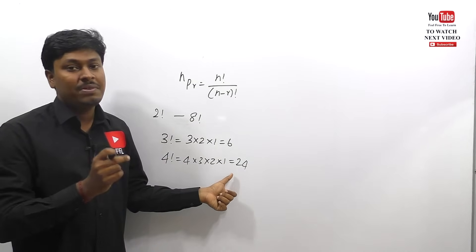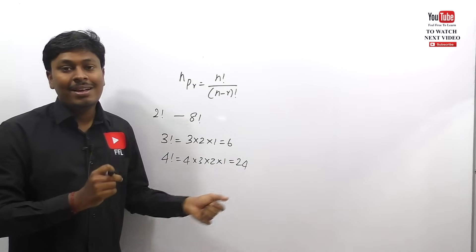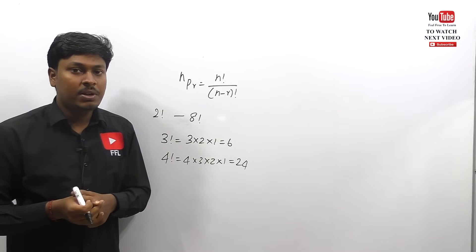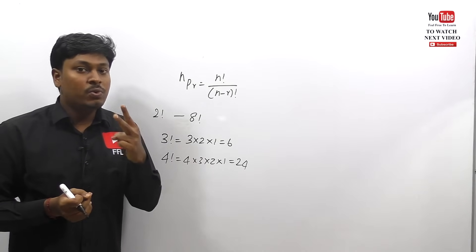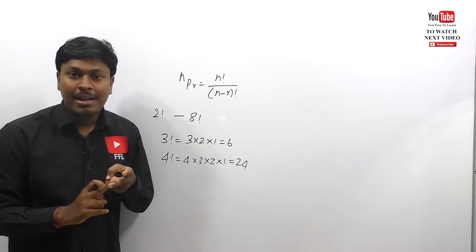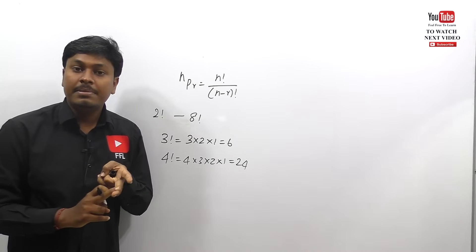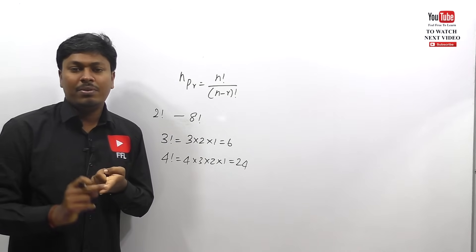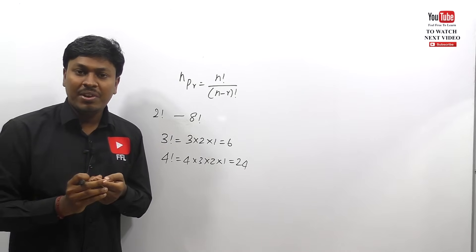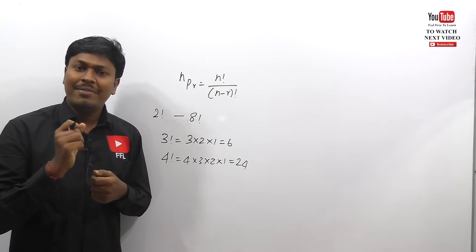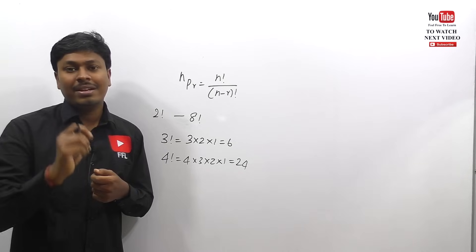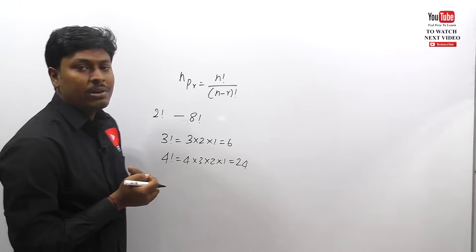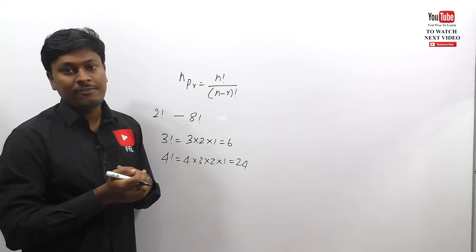In this permutation topic there are two categories: category number one is problems on words, and category number two is problems on numbers. If you watch all eight videos, you will be confident that you can clear the permutation topic. Now let's see the definition of permutation and combination.